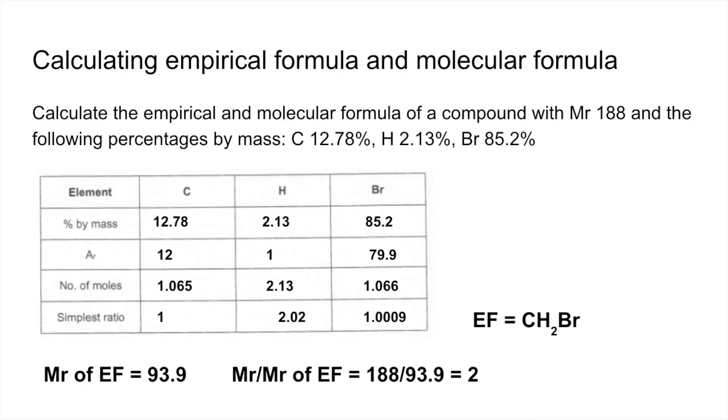So we get 2. So that means that the molecule has got double the atoms that are in the empirical formula. So we just double the empirical formula and we get C2H4Br2.